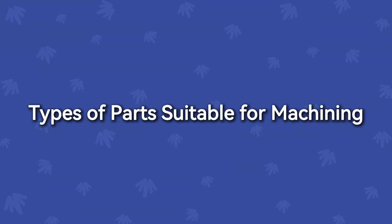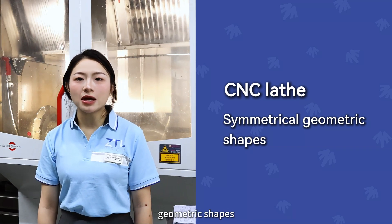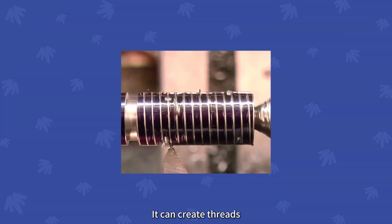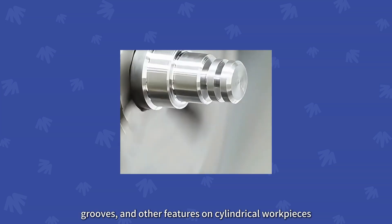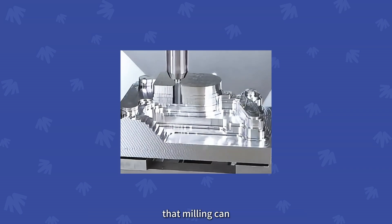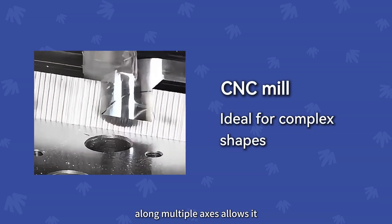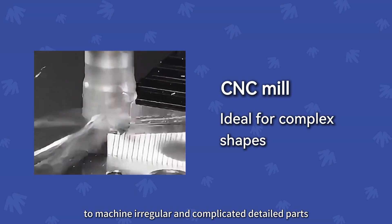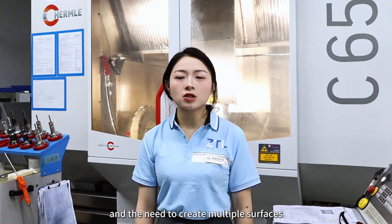Types of parts suitable for machining. CNC lathe is generally limited to symmetrical geometrical shapes. It can create threads, grooves, and other features on cylindrical workpieces, but it cannot achieve the detail on multiple surfaces that milling can. The ability of milling to move around multiple axes allows it to machine irregular and complicated detailed parts, making it a preferred choice for parts with intricate details and the need to create multiple surfaces.